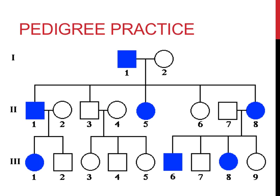Question number 6: what is the relationship between Roman numeral III, 2 and Roman numeral II, 5? First, identify who they are using the methods described earlier. Roman numeral II, 3 is Roman numeral III, 2's father's sister. That would make the individuals an aunt and a nephew. Try to imagine yourself as one of these individuals and picture your own family members, if that helps.